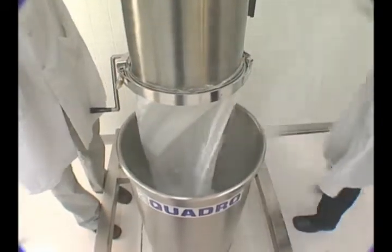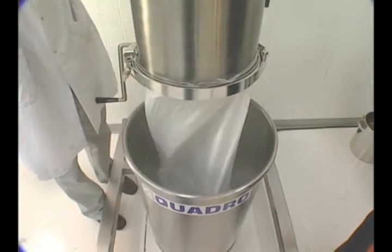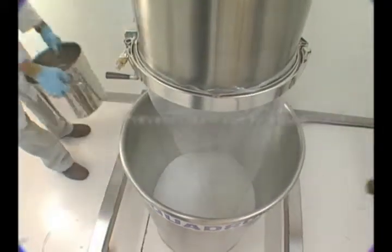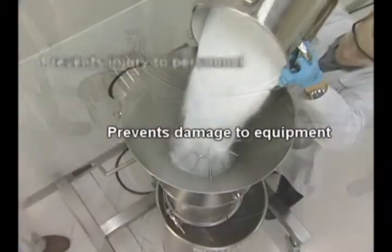By pre-screening material before entering downstream equipment, the Quadro Sifter reduces the risk of contamination of the final processed product, prevents damage to equipment, and injury to personnel.